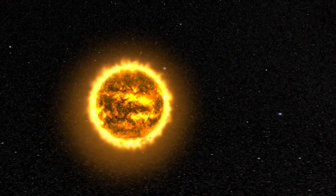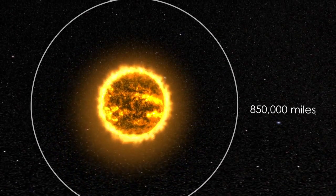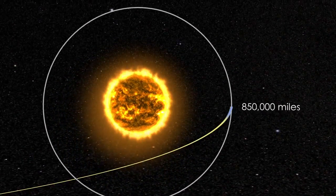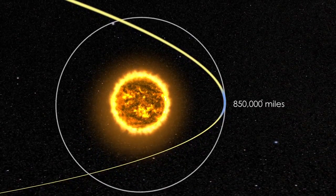To be considered a sungrazer, a comet needs to get within about 850,000 miles from the Sun at perihelion. Many come even closer, even to within a few thousand miles.